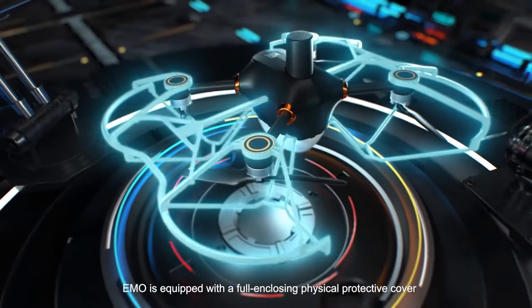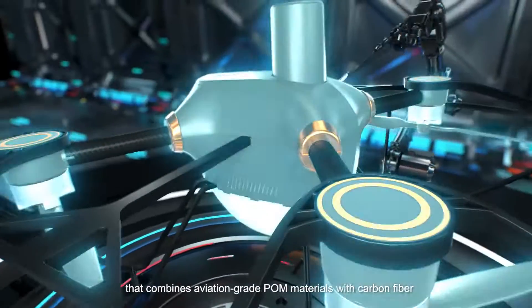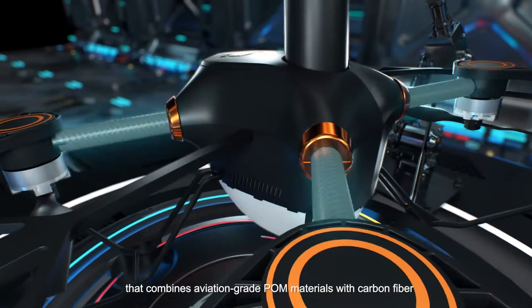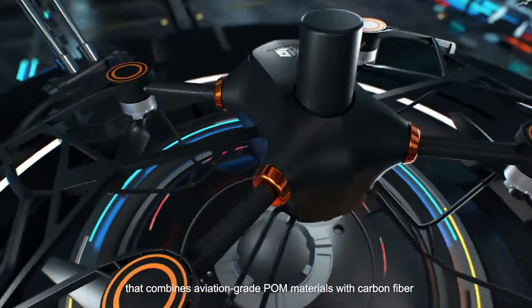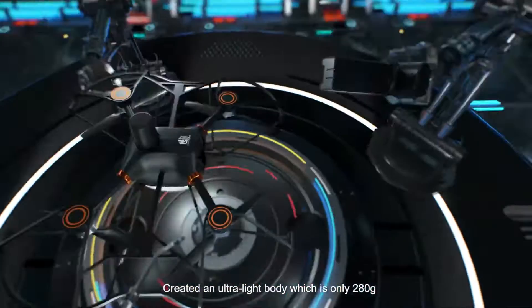Emo is equipped with a fully-enclosing physical protective cover that combines aviation-grade POM materials with carbon fiber, creating an ultra-light body which is only 280 grams.